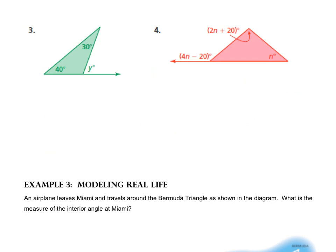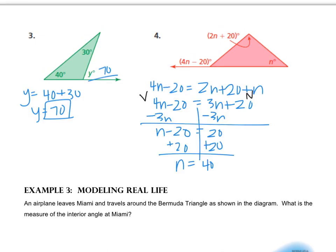I'd like you to try the next two on your own. For number 4, I almost finished but I have to bring 40 up to the picture — N is 40. The angle up top is 100. What the question asks for is the exterior angle, which would be 4 times 40 minus 20, so that's 140. The only correct answer is 140. If your work looks different and you have something wrong, please fix it.